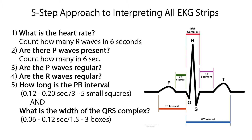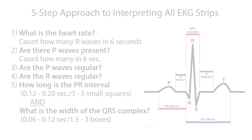Step 3: Are the P waves regular? Measure with calipers or a piece of paper. Step 4: Are the R waves regular? Again, measure with calipers or paper. Step 5: How long is the PR interval? It's normally 0.12 to 0.2 seconds, or 3 to 5 small squares. And what is the width of the QRS complex? It is normally 0.06 to 0.12 seconds, or 1.5 to 3 boxes.